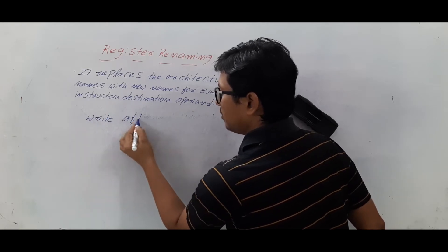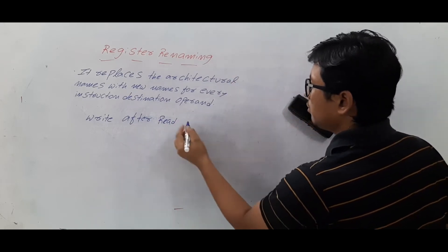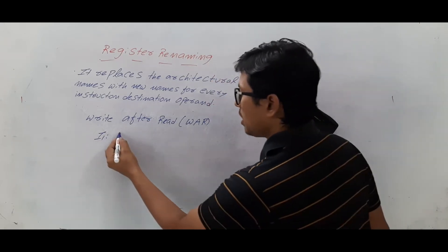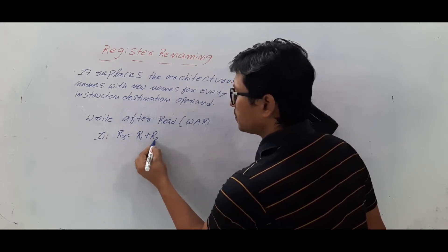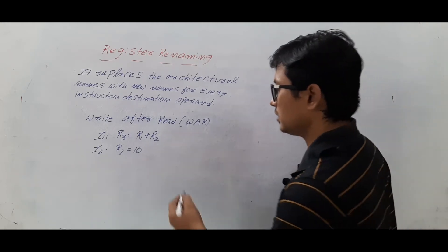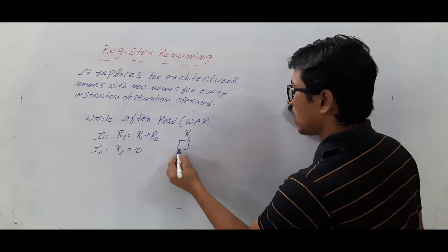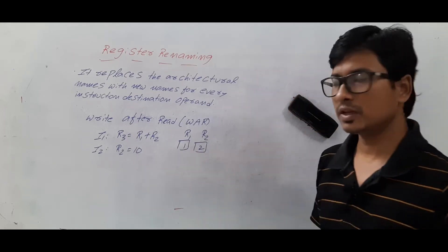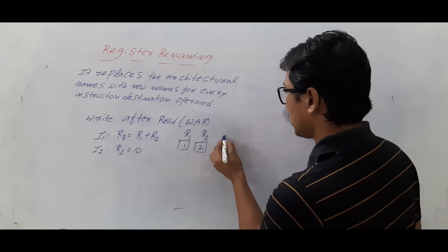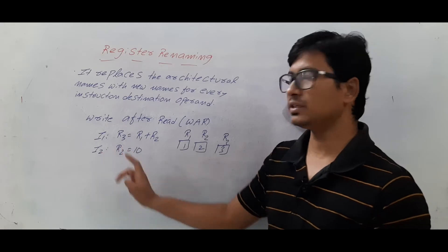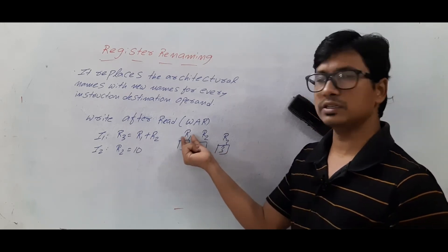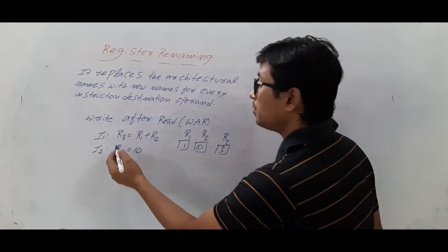Write after read data hazard is abbreviated as WAR. Let's take two instructions: instruction 1 is r3 = r1 + r2, and instruction 2 is r2 = 10 (loading value 10 into register r2). Assume r1 = 1 and r2 = 2. If we execute instruction 1 first, r3 = r1 + r2 = 1 + 2 = 3. Then executing instruction 2 updates r2 to 10. So the final values are r1=1, r2=10, r3=3. This is correct.